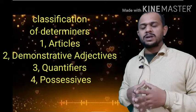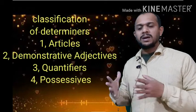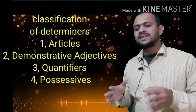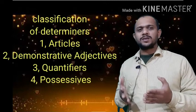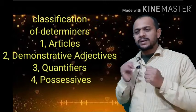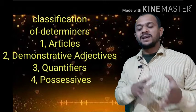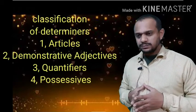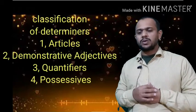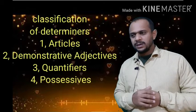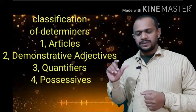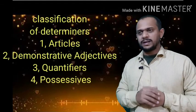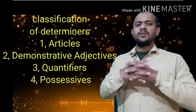Possessive quantity includes: my, your, their, our, her, his, its. These are called possessive determiners. So that was the fourth type of quantifier.